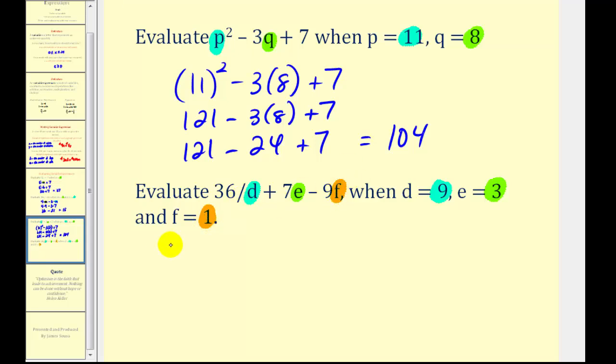So we have 36 divided by 9, plus 7 times 3, minus 9 times 1.